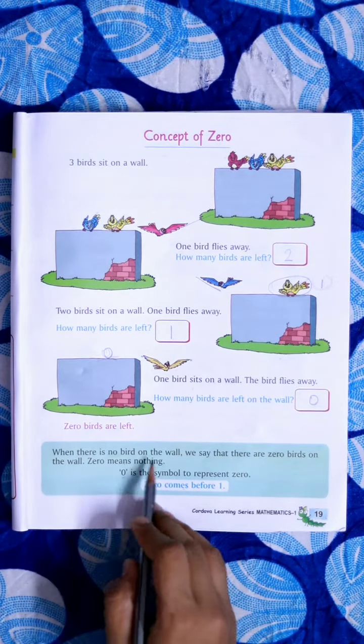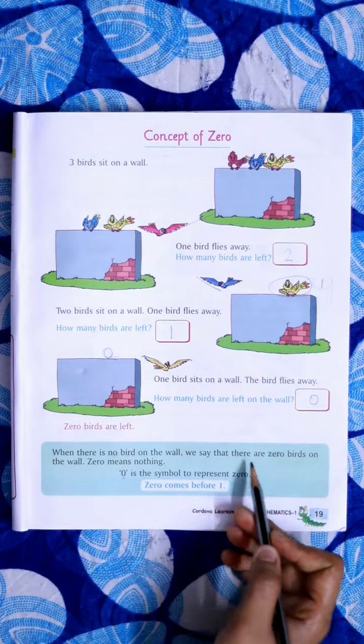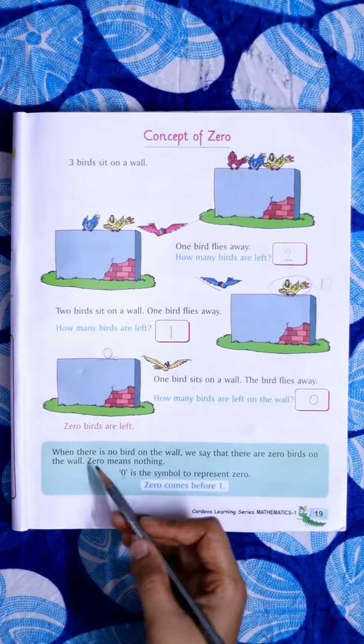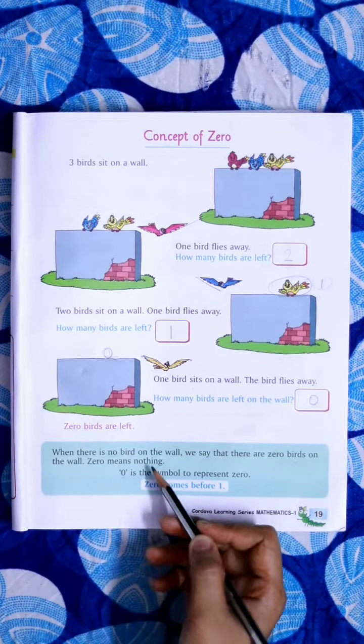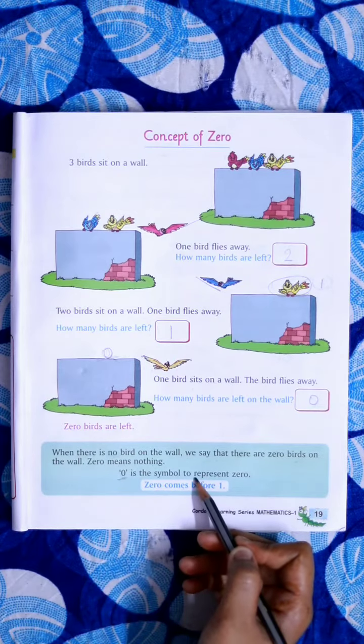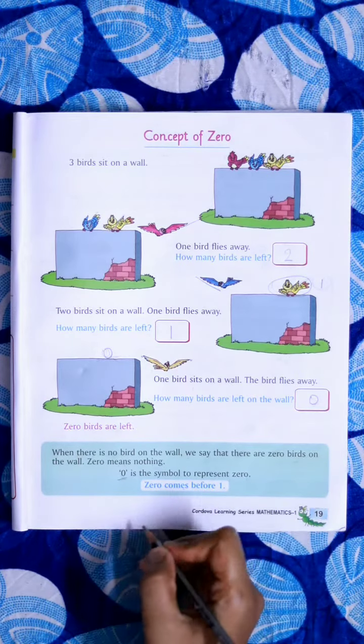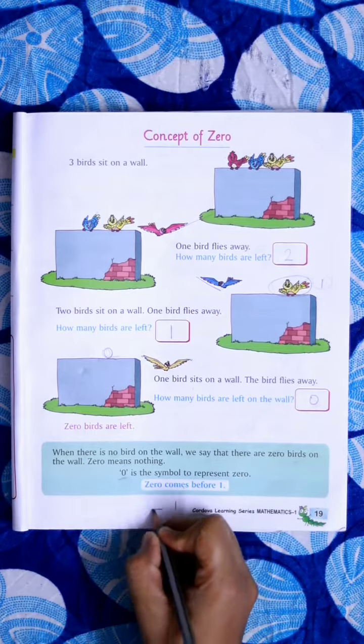When there is no bird on the wall, we say that there are zero birds on the wall. Zero means nothing. This is called the symbol to represent zero. Zero comes before one.